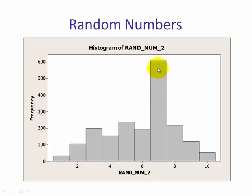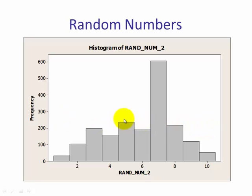As we can see, most people pick 7. Theoretically, we expected this to be random, where each digit had the same chance of being picked. But that is not the case — most people pick the number 7.